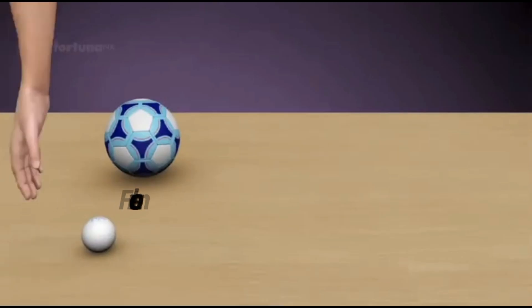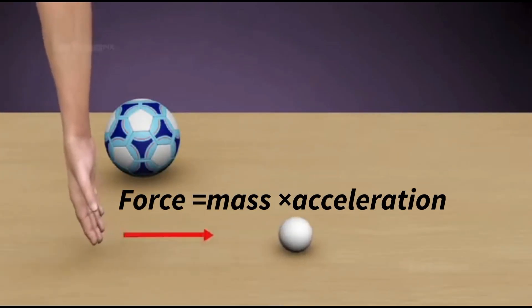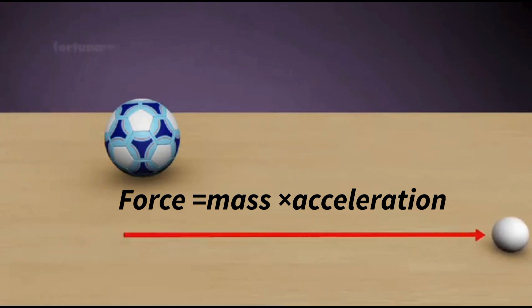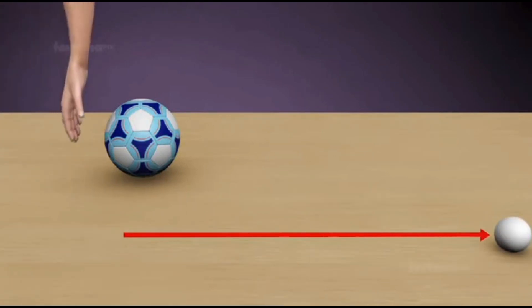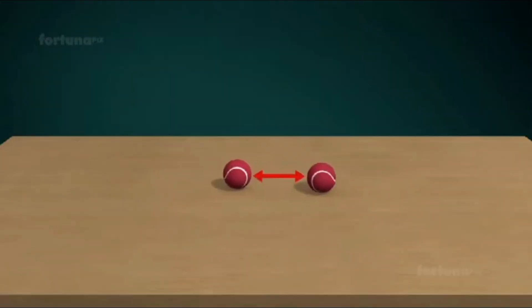The second law, F equals ma, describes how force and mass are related to acceleration. Finally, the third law states that for every action, there is an equal and opposite reaction.